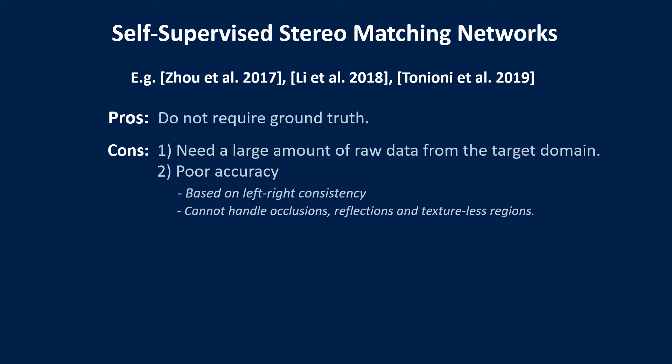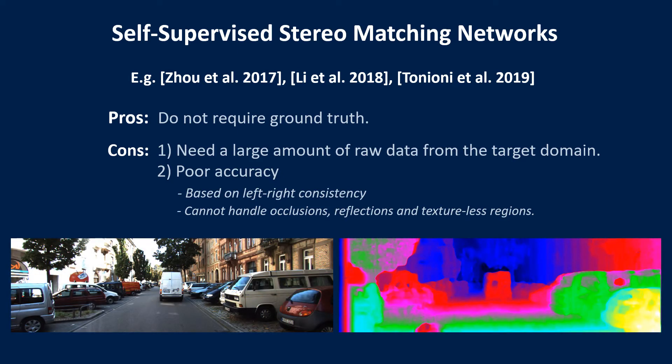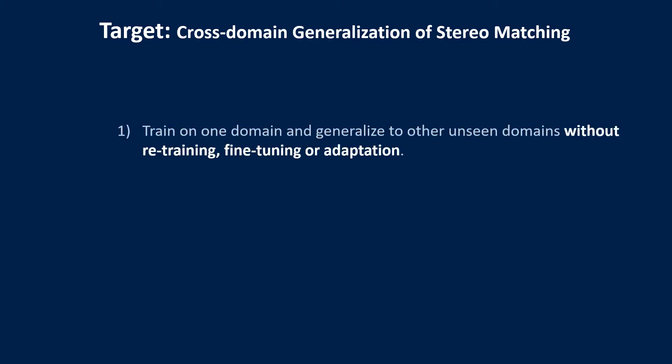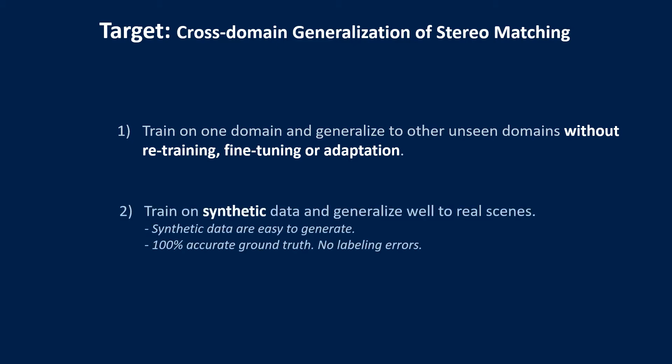As illustrated in this figure, self-supervised models cannot handle occlusions, reflections, and texture-less regions. Our target is to train stereo matching models on one domain and then generalize to other new domains without fine-tuning or retraining — especially training on synthetic data and generalizing to real scenes, since synthetic data are easy to generate with accurate ground truth.